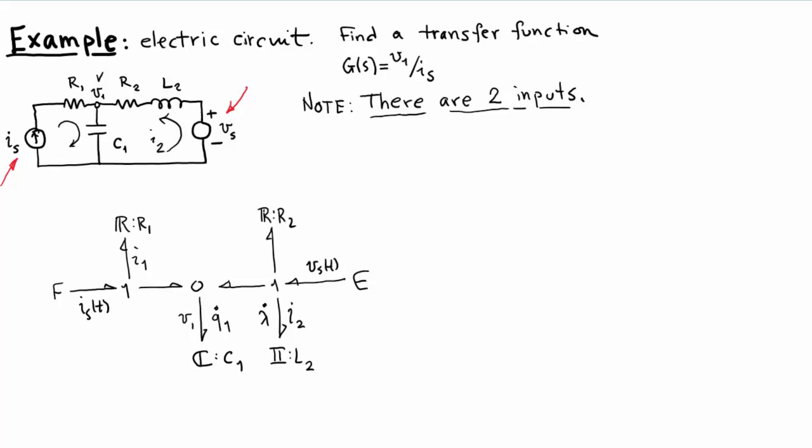Causality. Flow source to the 1. Integral causality. It propagates there. I should have done the effort first. This is determining flow, and that gives me an independent state there and there. So N equals 2. State vector: Q1, lambda 2.